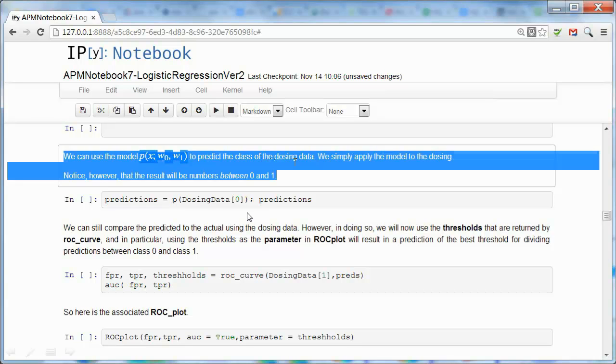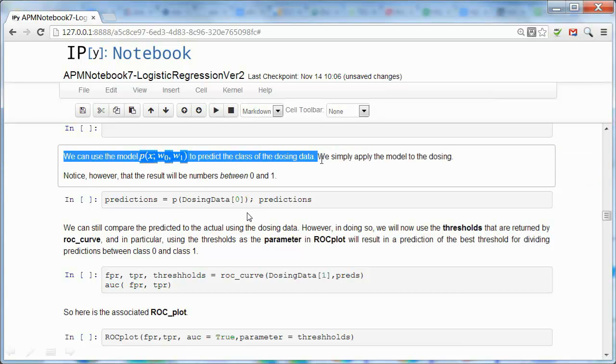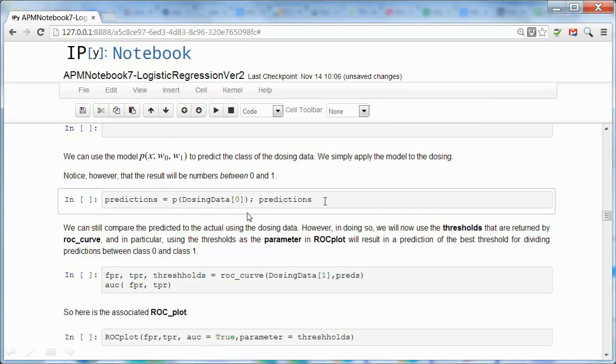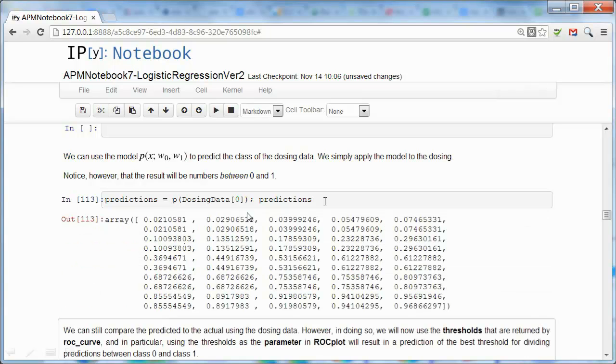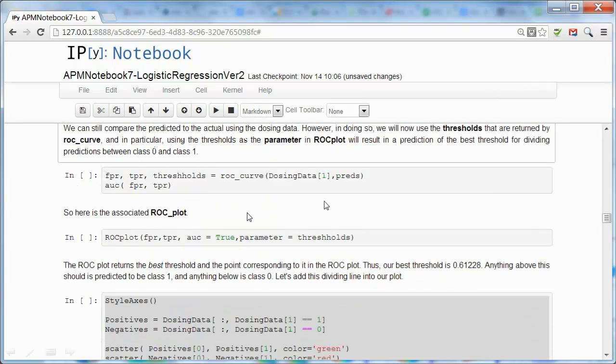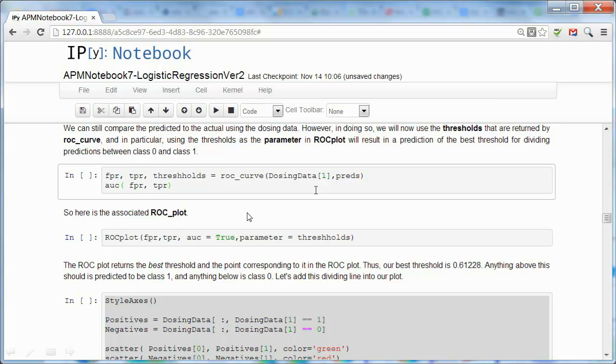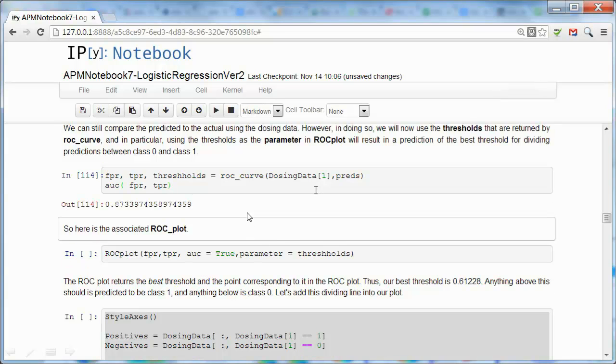So let's look at this in the IPython notebook. We're going to use our model to predict the doses. Notice there are no 0s and 1s. They're all between 0 and 1. We can still use the receiver operating characteristic. We can still get an area under the curve.